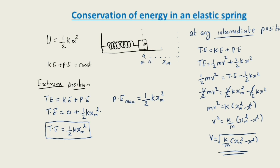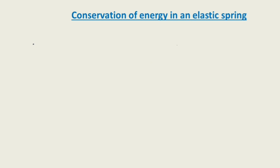This is the mean position — also called the origin — and these are the two extreme positions. This relation gives us the speed of the mass at any intermediate position. Now let's discuss the total energy at the equilibrium position, which is the mean position or the origin.